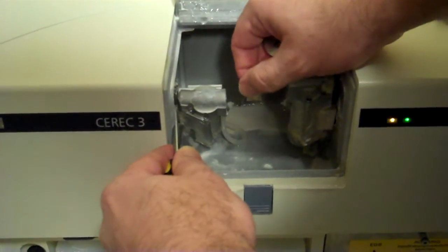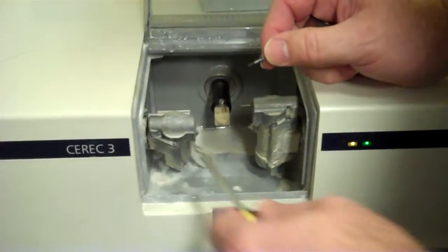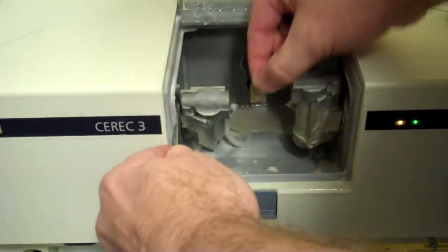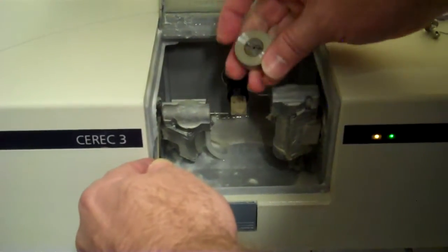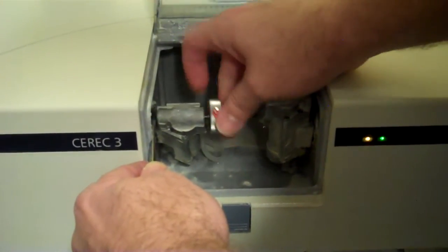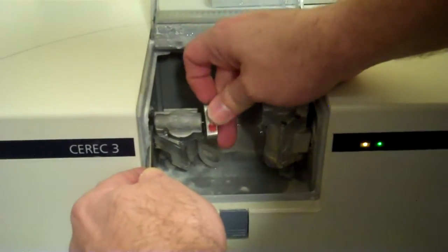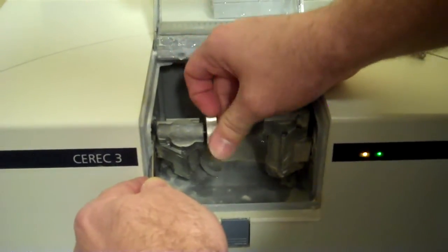So to put it back in, you would do exactly the opposite. You push the button in, get the burr in there, get your burr tool on there, spin it. You're going to feel it getting tighter.